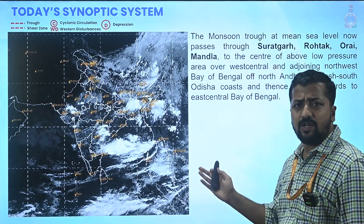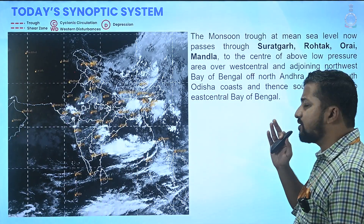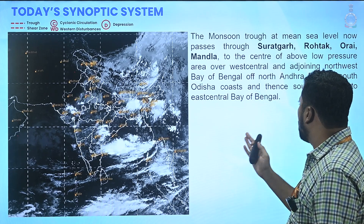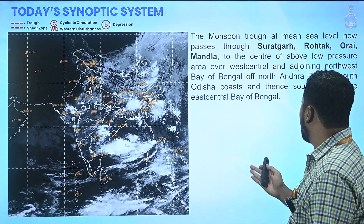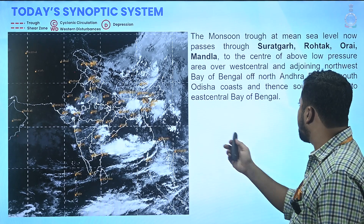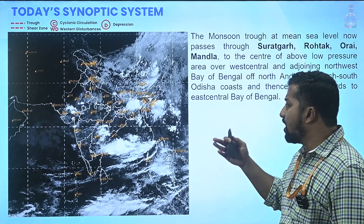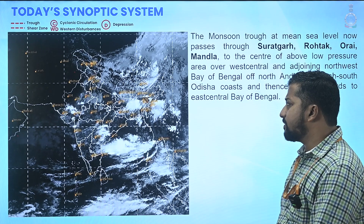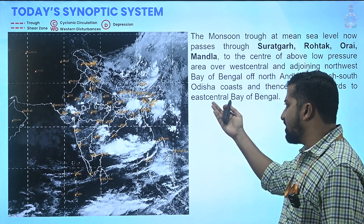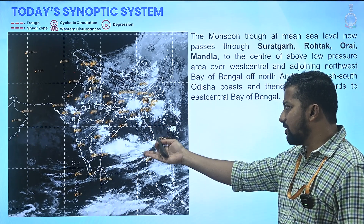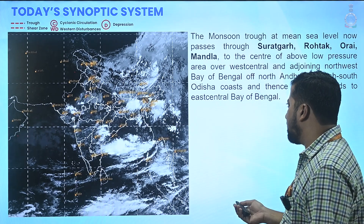Looking into today's synoptic conditions, the monsoon trough at mean sea level passes through Suratgarh, Rohtak, Aurai and Mandla to the center of a low pressure over west central and adjoining northwest Bay of Bengal, and then southeast towards east central Bay. Along with this, there are lower level systems over the eastern parts of the country, a cyclonic circulation over Oman, and a cyclonic circulation over the Haryana neighborhood.